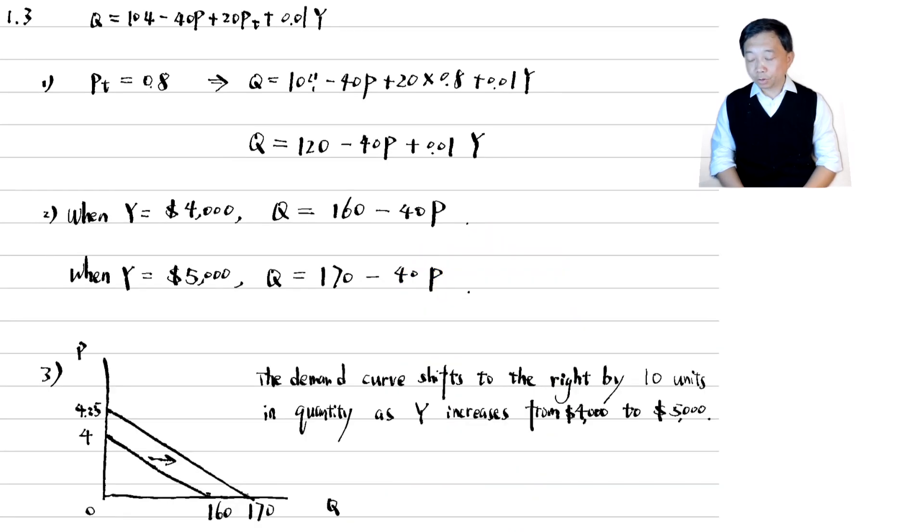In the final step, we draw the graph. We usually put the price on the y axis. We know that the two demand curves are parallel because they have the same slope. We can plug in particular values such as p equals 0 to find the intersection points in the quantity axis and the price axis. The demand curve shifts to the right by 10 units in quantity as income increases from $4,000 to $5,000 holding the other variables fixed. Keep in mind that the demand curve we draw is the inverse demand function because the y axis is the price and x axis is the quantity demanded. But it is a convention to call it the demand curve.